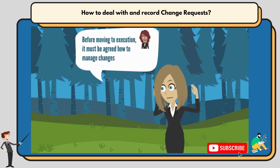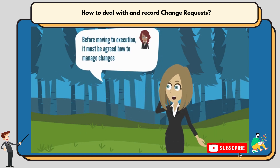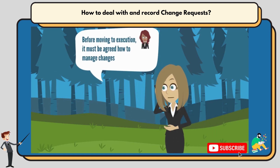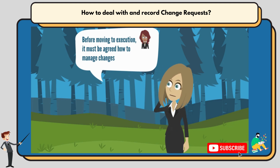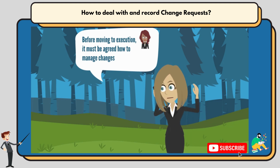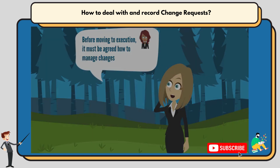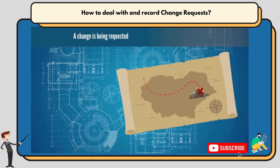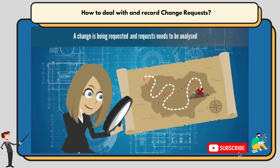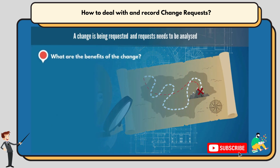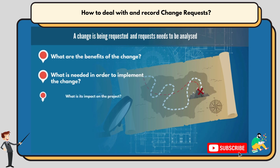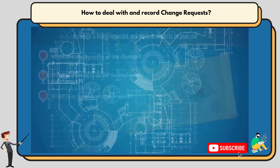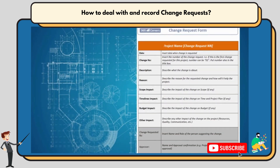Before moving to execution, it must be agreed how to make changes, and as with most parts of the planning process, needs to be established. The thing that will start the process is a change being requested, and that request needs to be analysed. What are the benefits of the change? What is needed in order to implement the change? And what is its impact on the project? A formal document must be created to collect this data — a change request form.